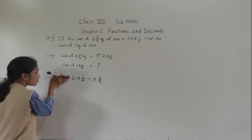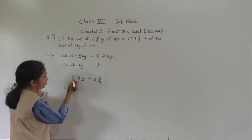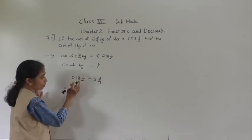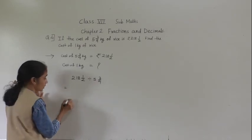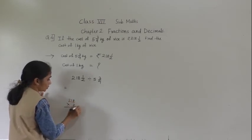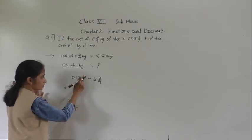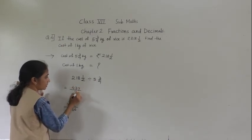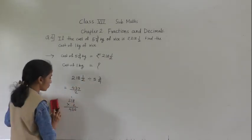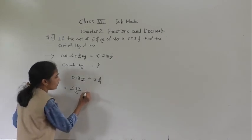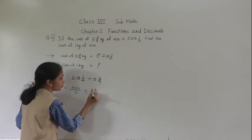We will solve like a simple example. Convert 218 integer 1 upon 2 to improper fraction: 218 into 2 is 436, plus 1 is 437. So 437 upon 2. Convert 5 integer 3 upon 4: 4 fives are 20, plus 3 is 23, so 23 upon 4.